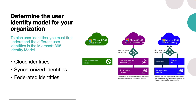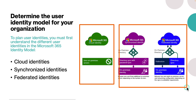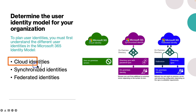First, we need to understand the different user identities in the Microsoft 365 identity model. An organization can choose to either manage all their identities in Microsoft 365, or they can use their on-premises Active Directory domain services to manage their identities. Let's learn these three different types of identity models. The first type is cloud identities.